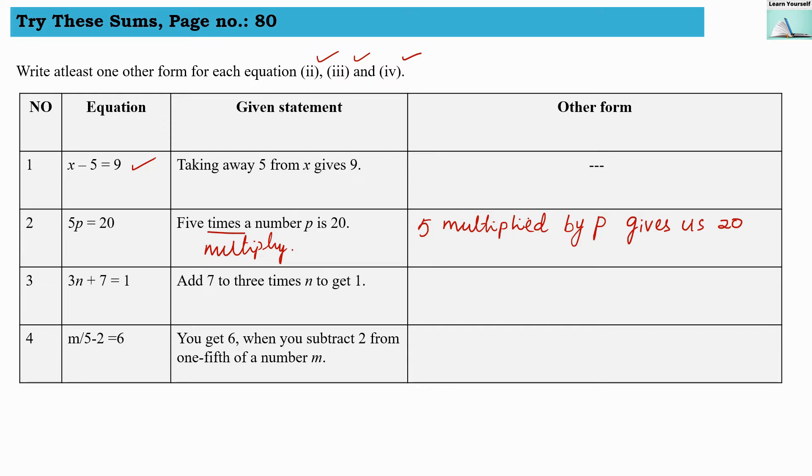Third equation is 3n plus 7 gives us 1. So they say that add 7 to 3 times n to get 1. So here is the statement: add 7, we are going to write addition of, and times we are going to write multiplied with. So addition we are converting that word into addition and times we are writing multiplied. So addition of 3 multiplied by n and 7.